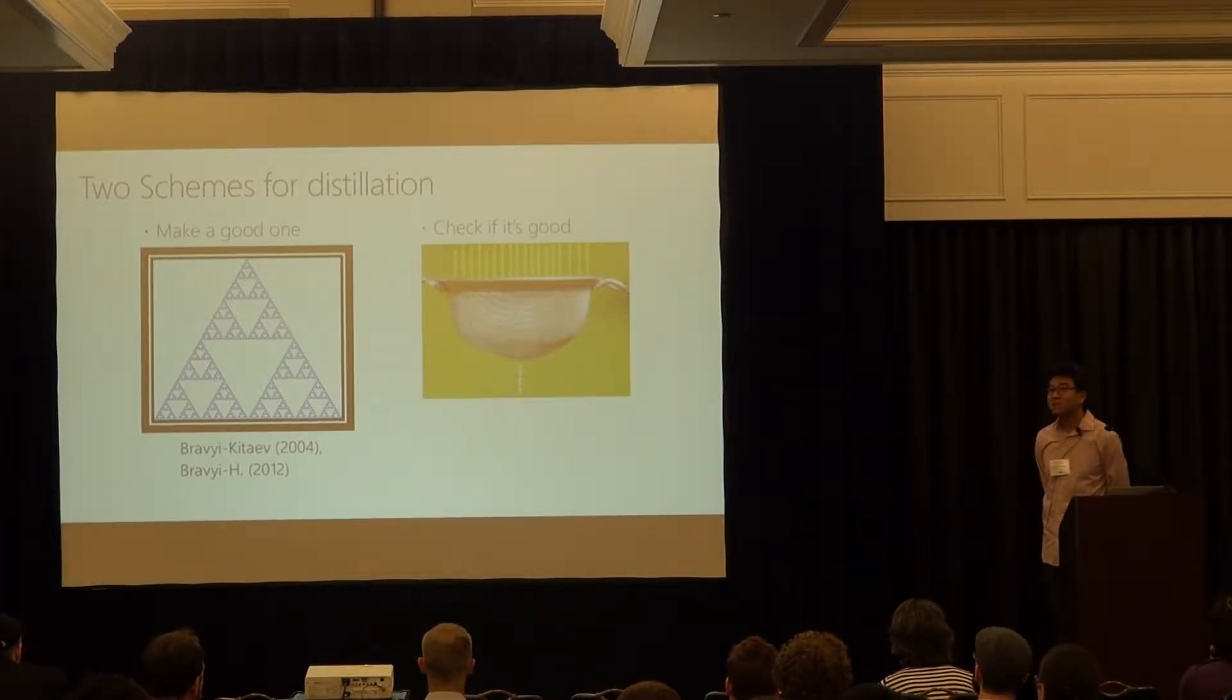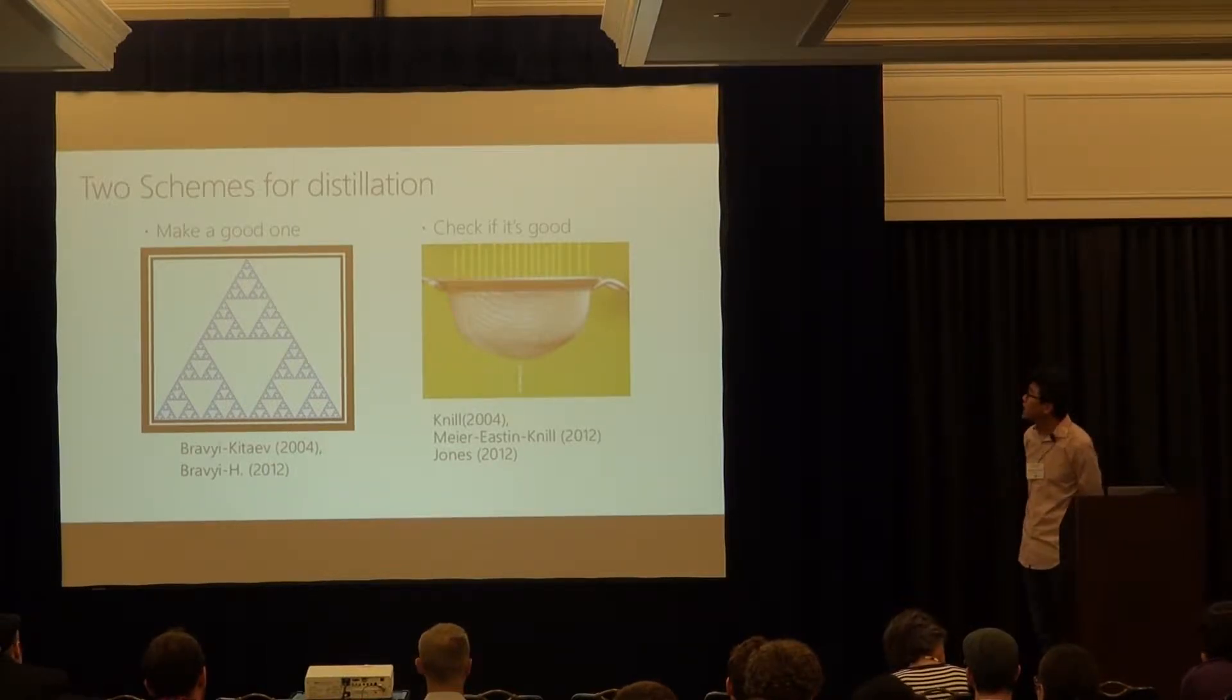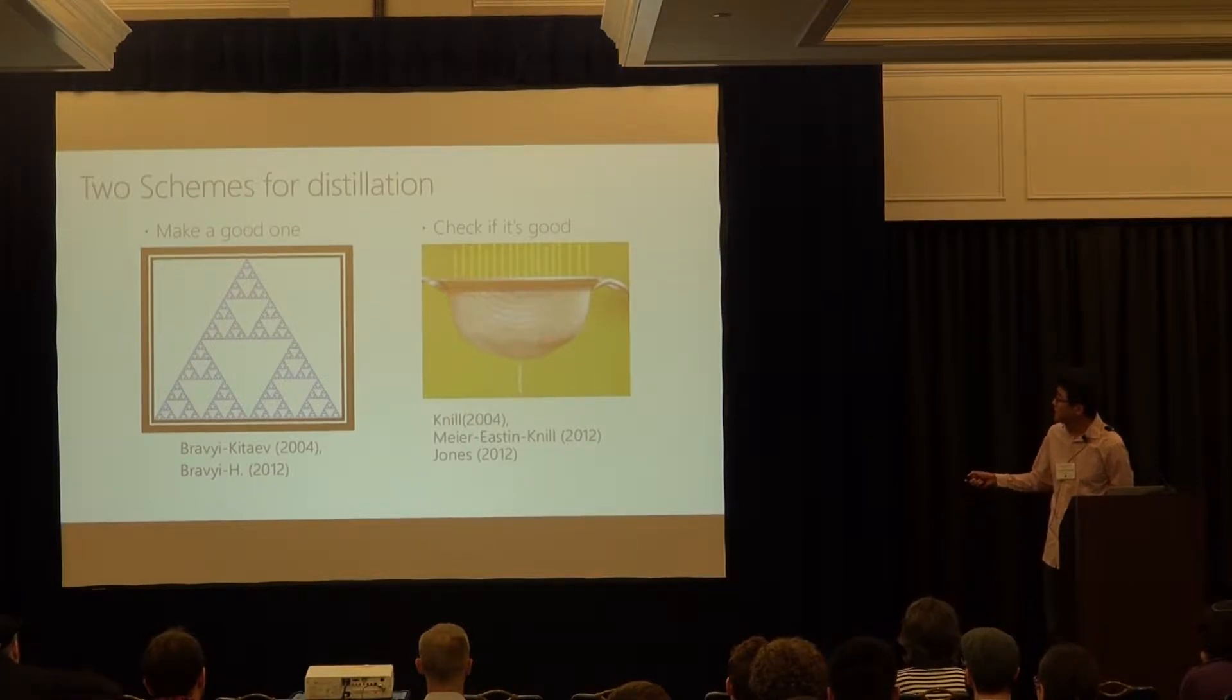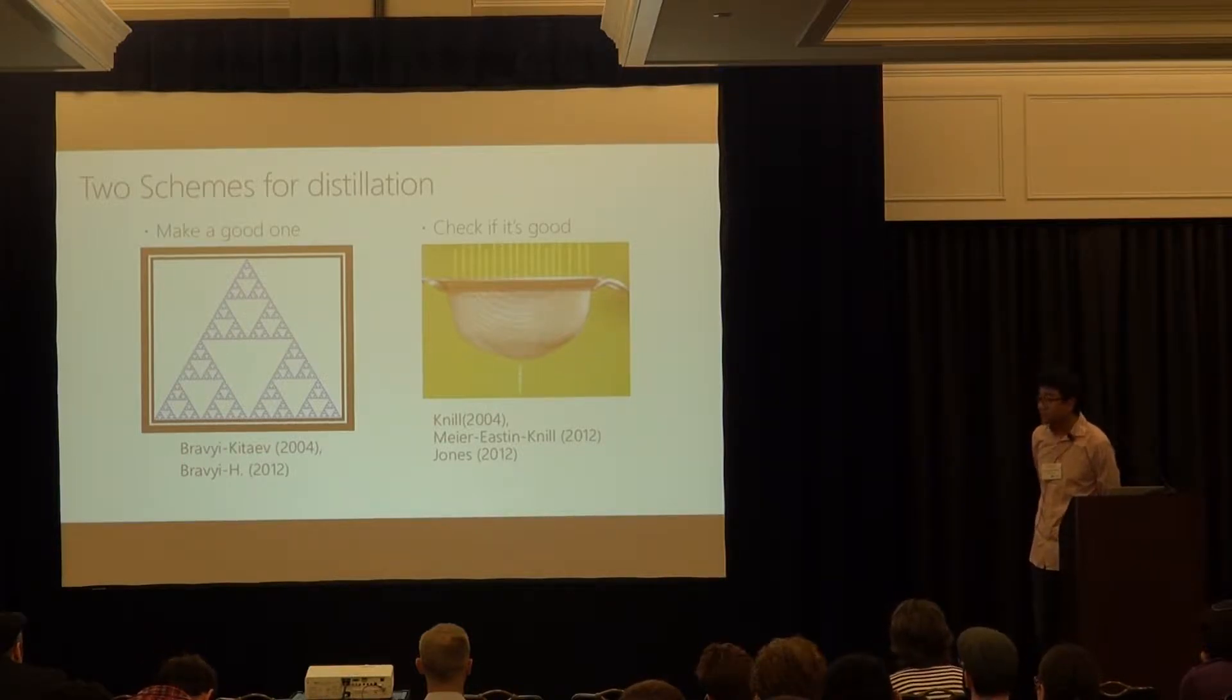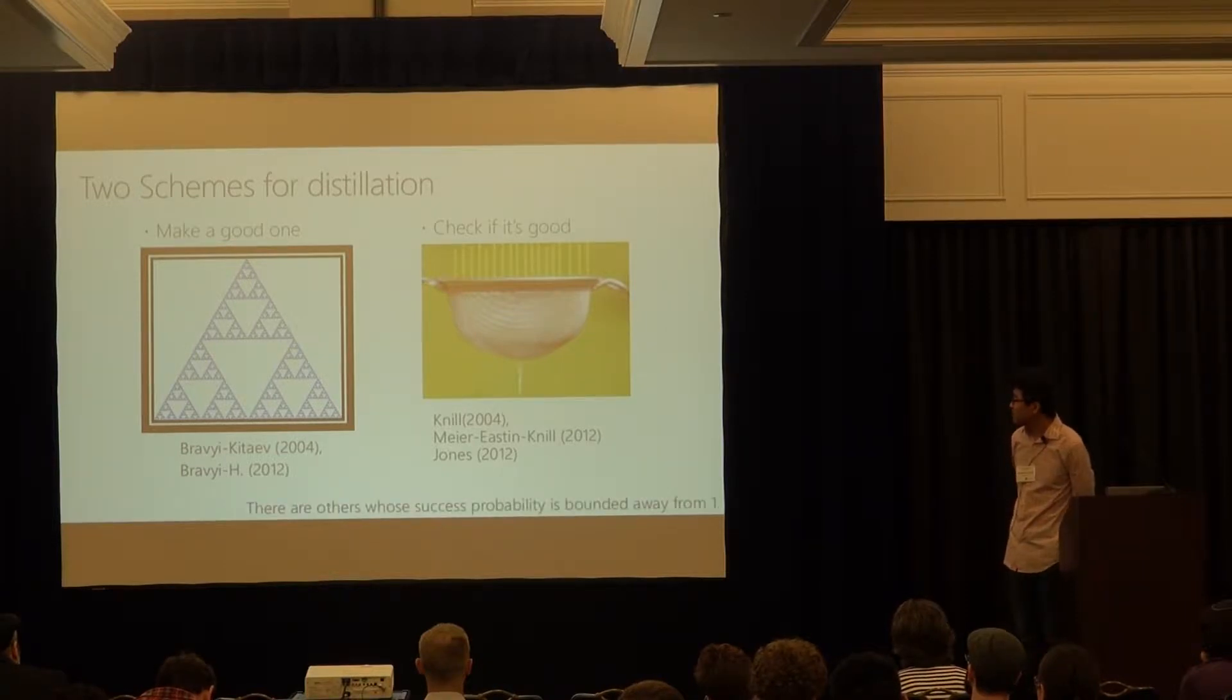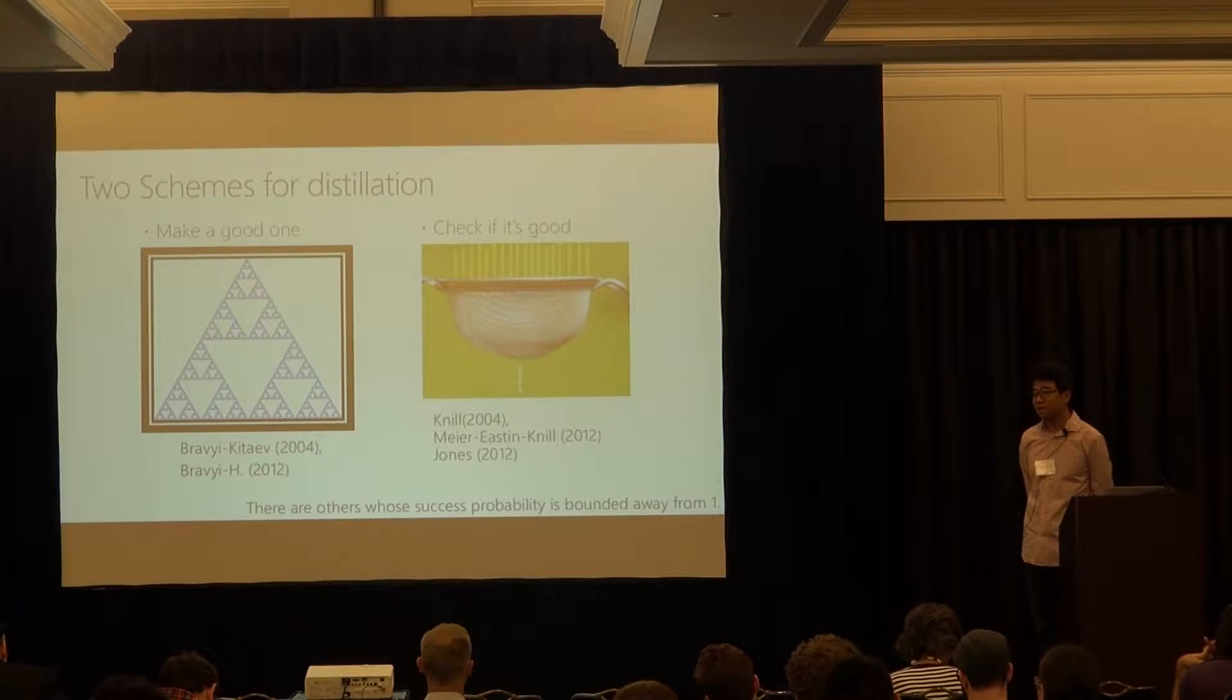And there is a relatively unknown, less well-known, scheme due to Knill and others. This one performs equally well with the previous one, and sometimes better in certain regime. And let me just first explain to ID, let me explain two ideas in sequence, and have you to have mathematical intuition about those. There are other distillation schemes whose success probability is not one, even if you inject perfect T ones, and I will not talk about those protocols.